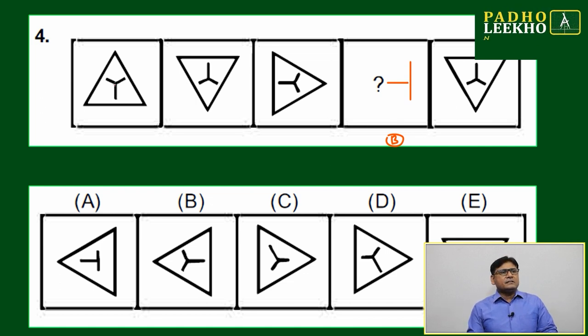Like here, this bigger side is in downward, this is upward, this is leftward. Next, what will be there? Rightward.